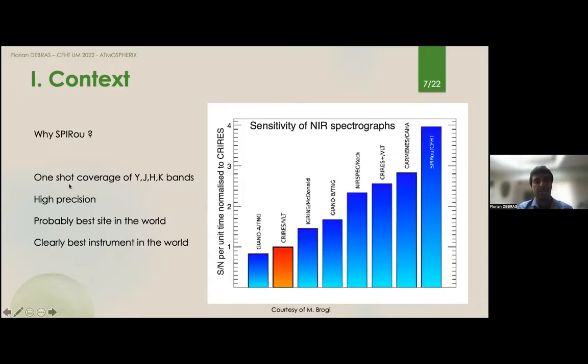What you can see is that SPIRou is expected to be largely better than any of the other spectrographs that exist on Earth so far. It has a one-shot coverage of a large band, high precision due to its capacity to do velocimetry, and of course there is the Hawaiian site which is probably the best site in the world. So coupled all this, for this kind of objective SPIRou is the best instrument in the world today.